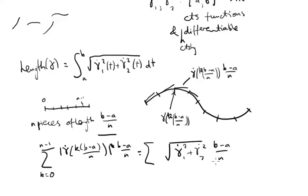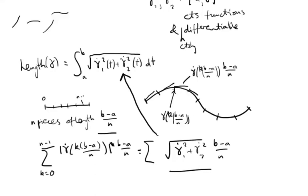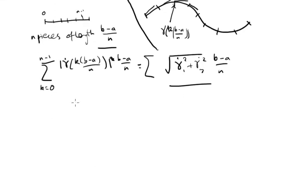And as n goes to infinity, this sum tends to this integral. Okay, let me give you an example. The example is going to be a very simple curve. Gamma of t equals cos t sine t.